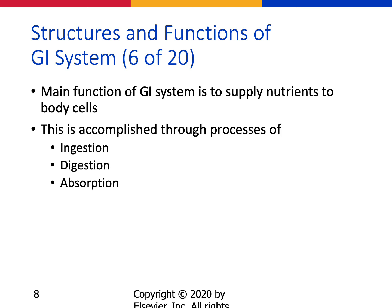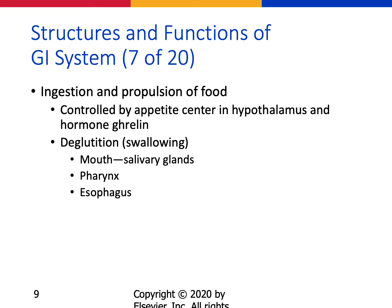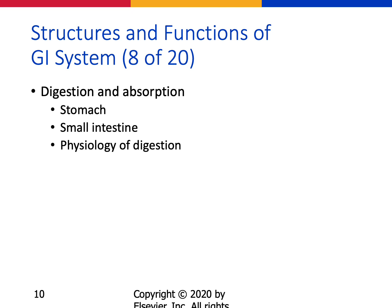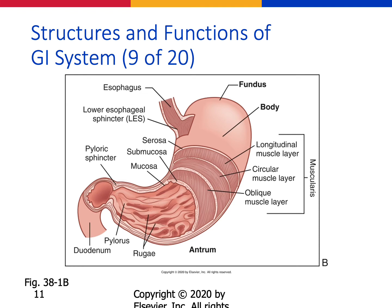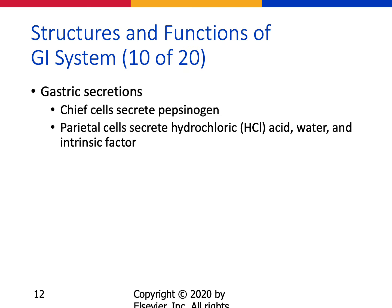The main function of the GI system is to supply nutrients to body cells, accomplished through ingestion, digestion, and absorption. Digestion and absorption occur in the stomach and small intestine. Here's a graph showing the different layers of the stomach lining and where it originates and terminates from the esophagus into the duodenum.